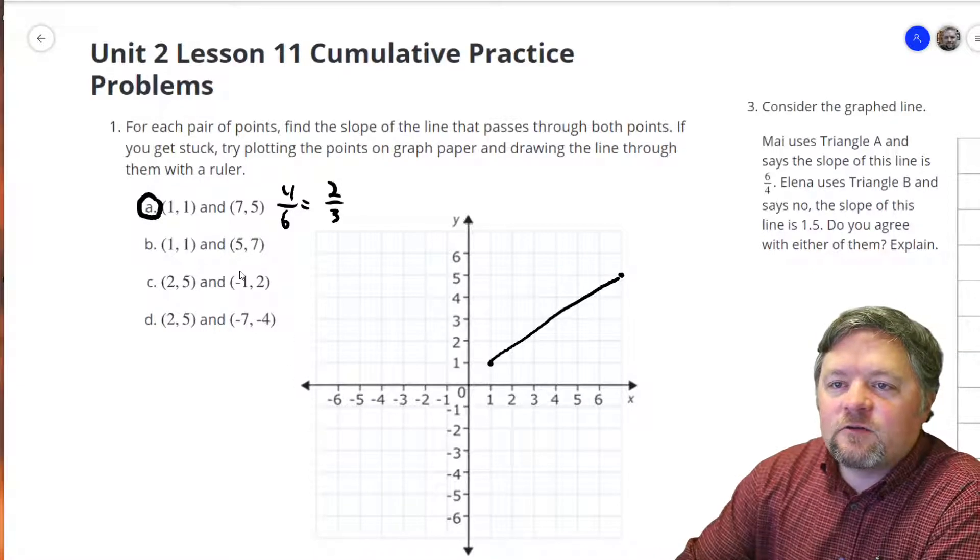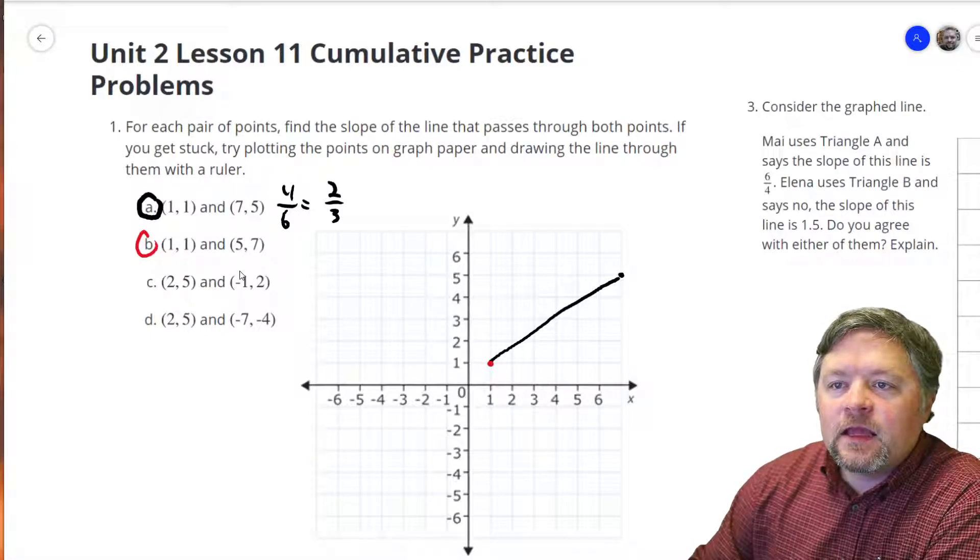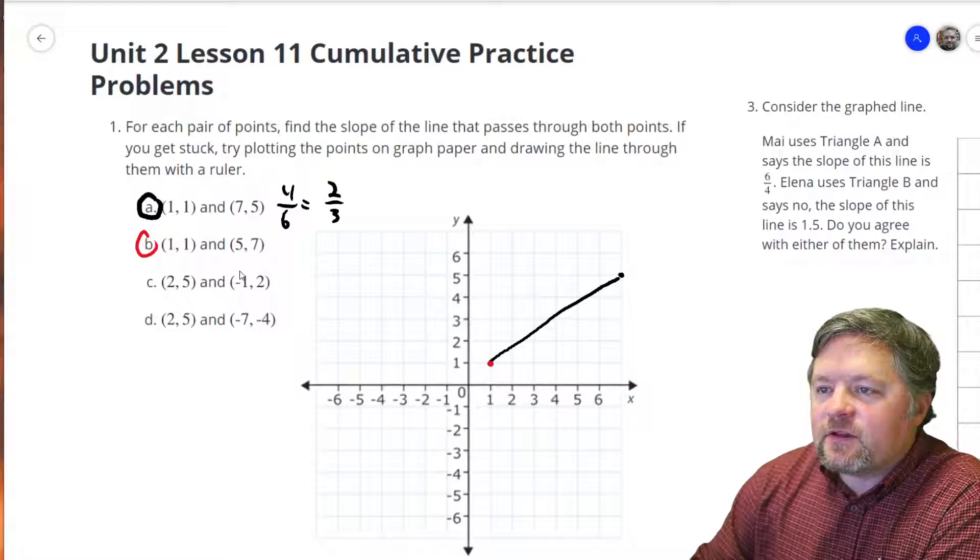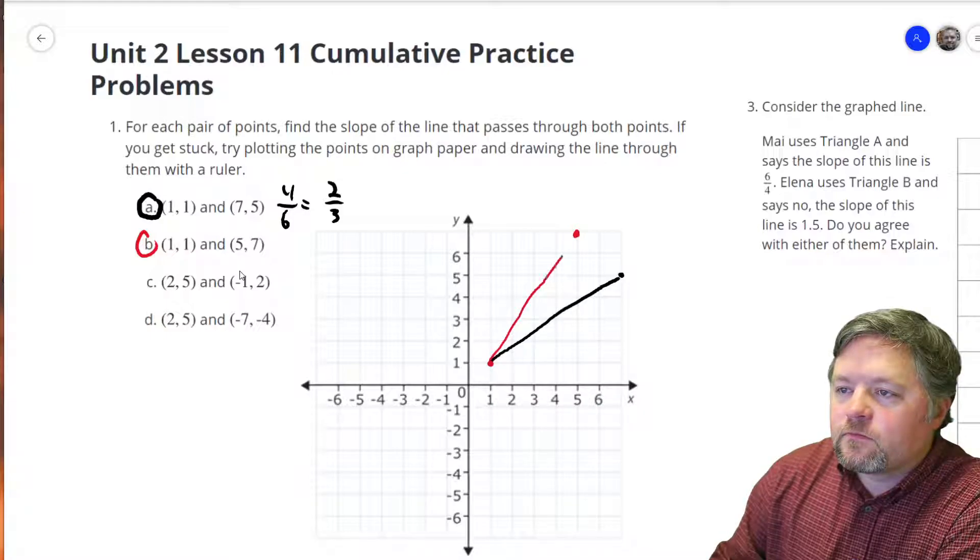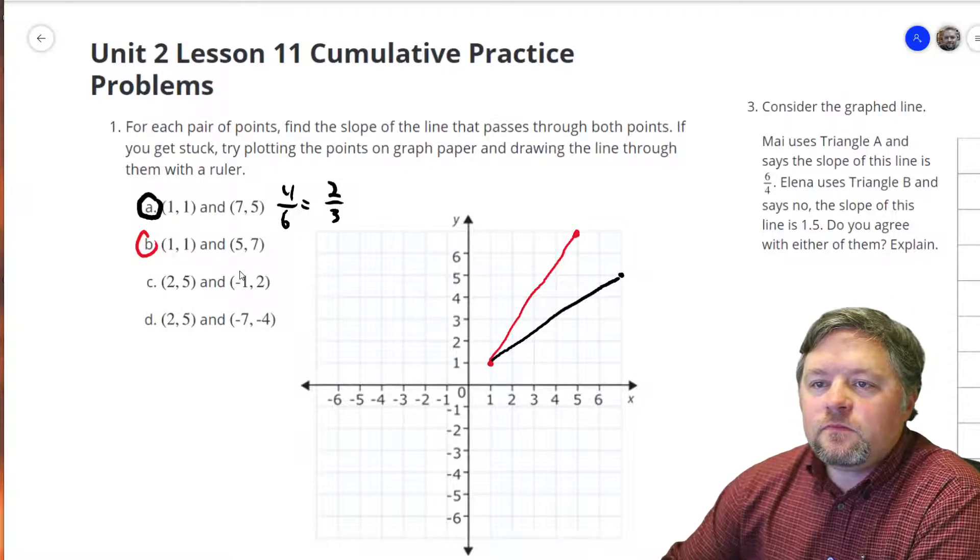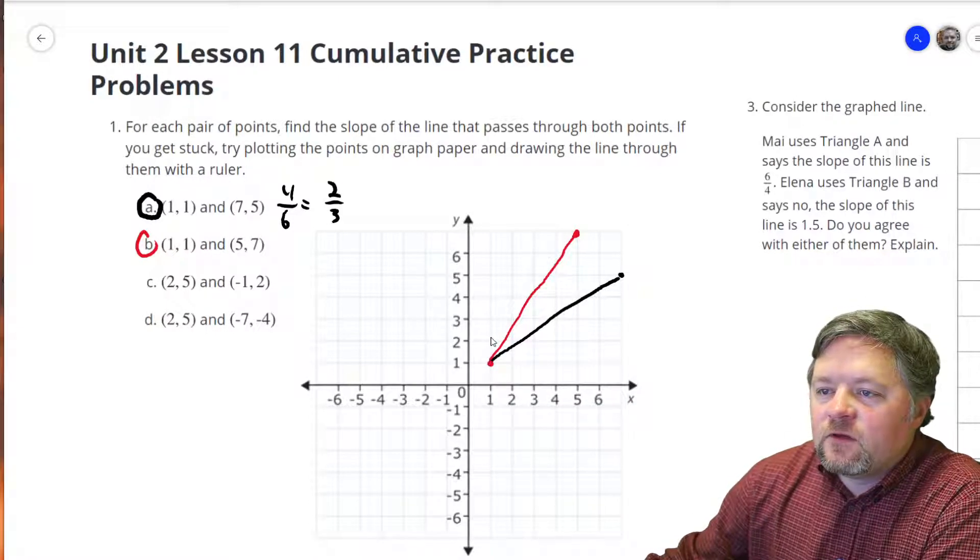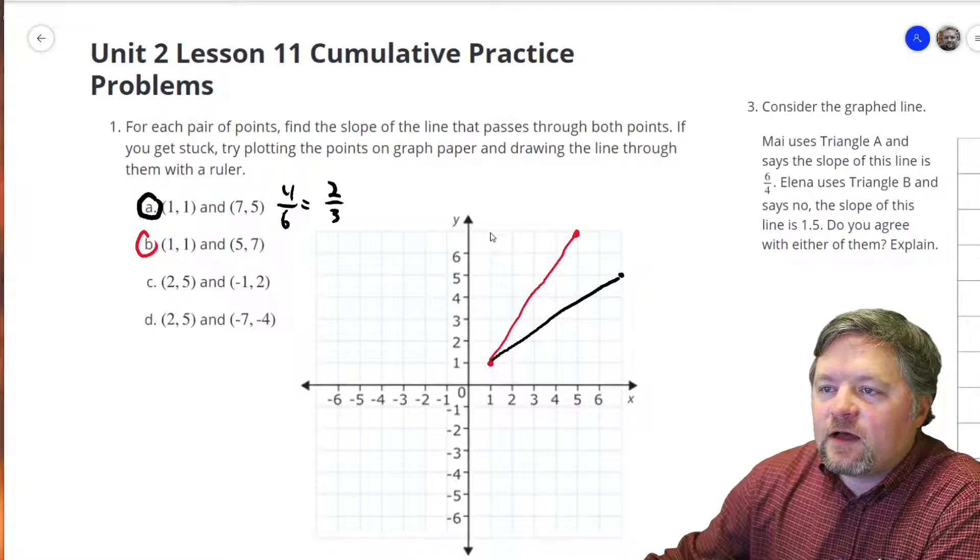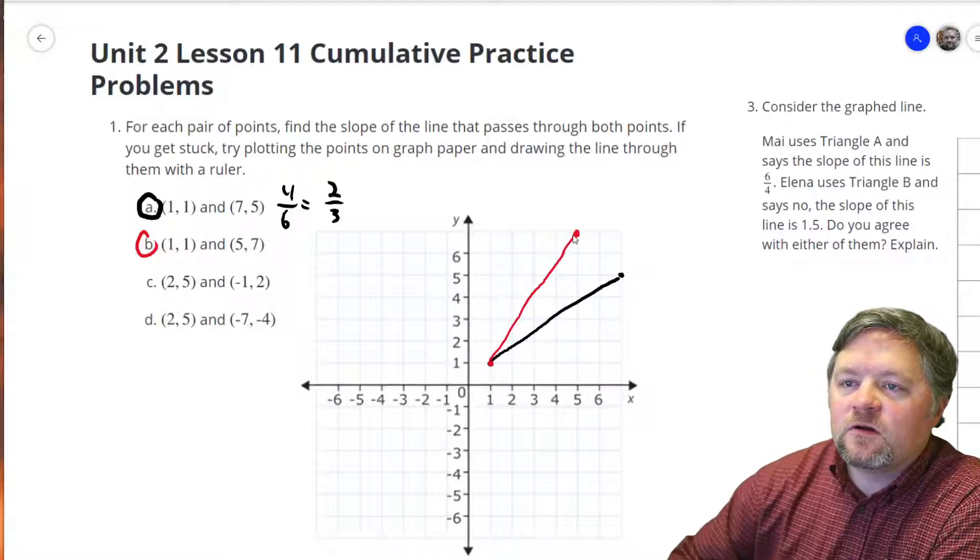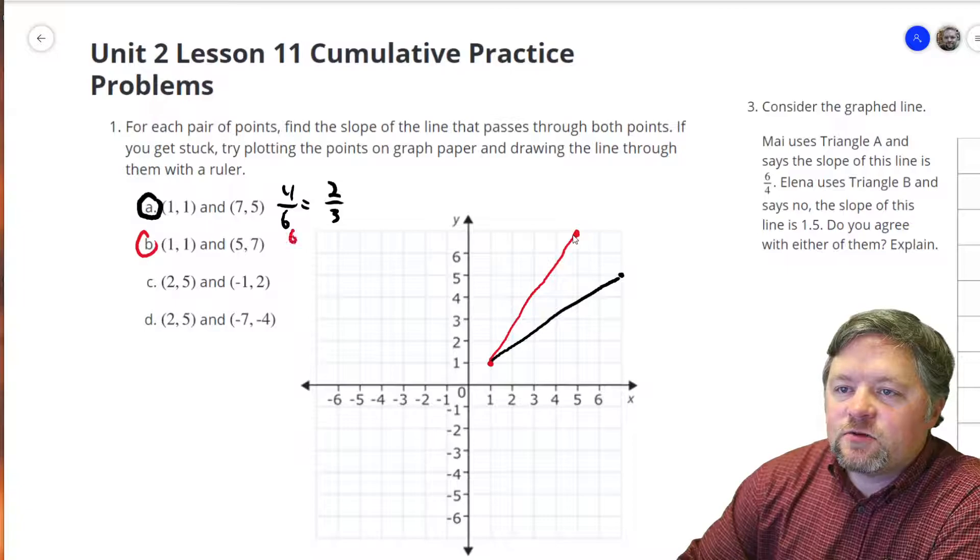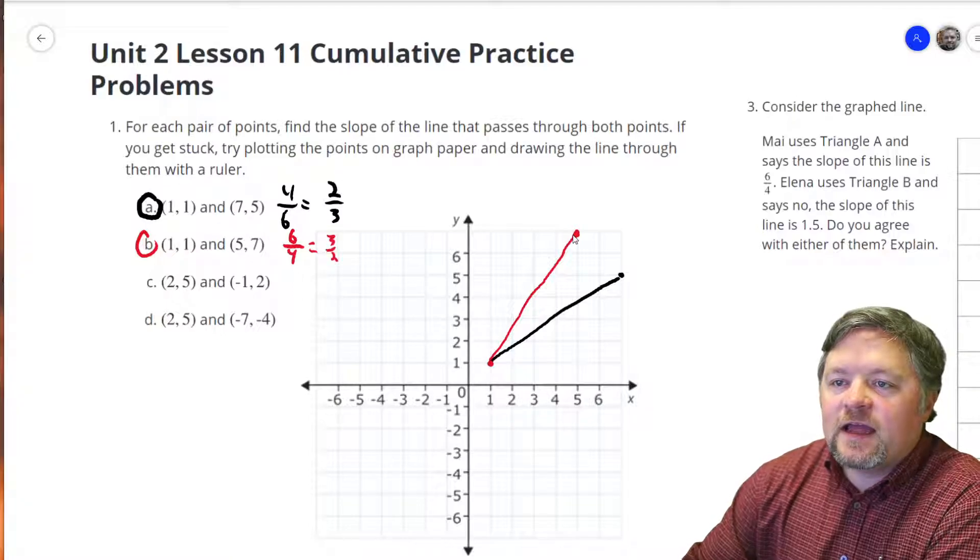Our next one goes through 1, 1, and 5, 7. Now we have a rise of 1, 2, 3, 4, 5, 6, and a run of 1, 2, 3, 4. So this one, 6 over 4, which is 3 halves.